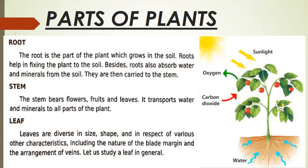Before we discuss parts of plants, we learn that we are surrounded by green plants. Most of the food that we eat comes from plants. For example, rice comes from paddy. We get different fruits from different plants, and even the vegetables we eat come from plants. Animals also give us food.